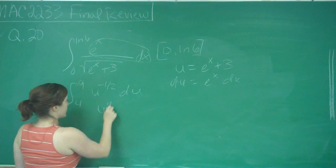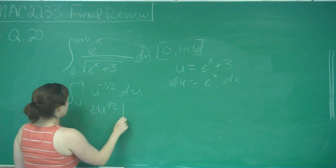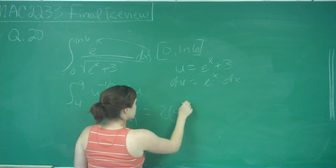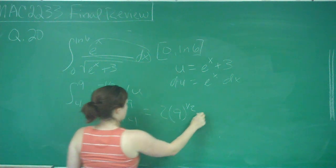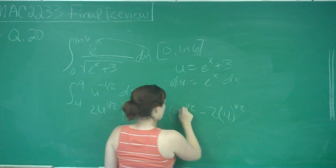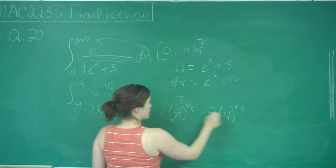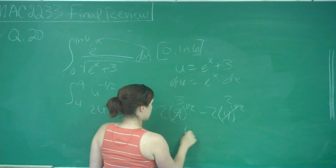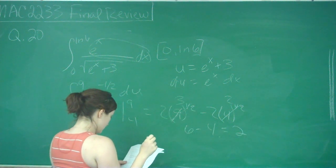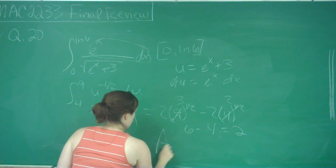So this would be u to the 1 half times 2 from 4 to 9. So that's 2 times 9 to the 1 half minus 2 times 4 to the 1 half. 9 to the 1 half is 3, 4 to the 1 half is 2. So we get 6 minus 4, which is equal to 2. And that is answer choice A.